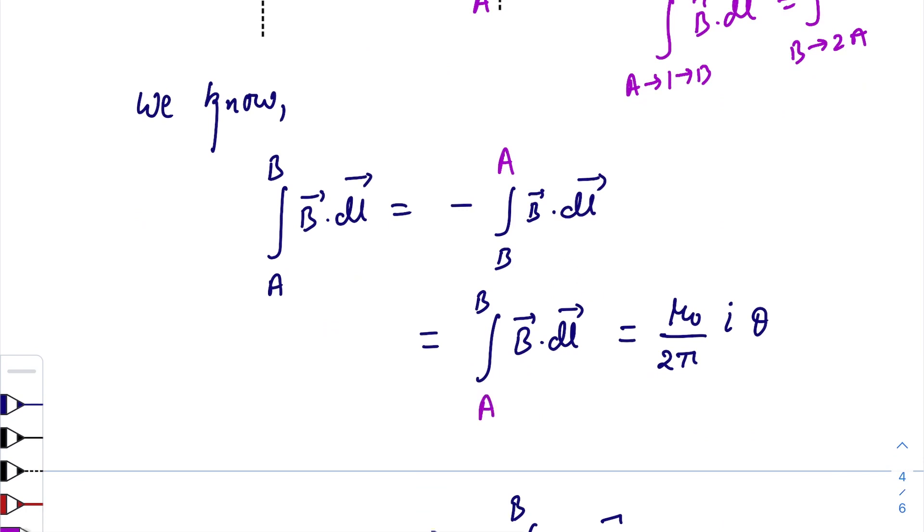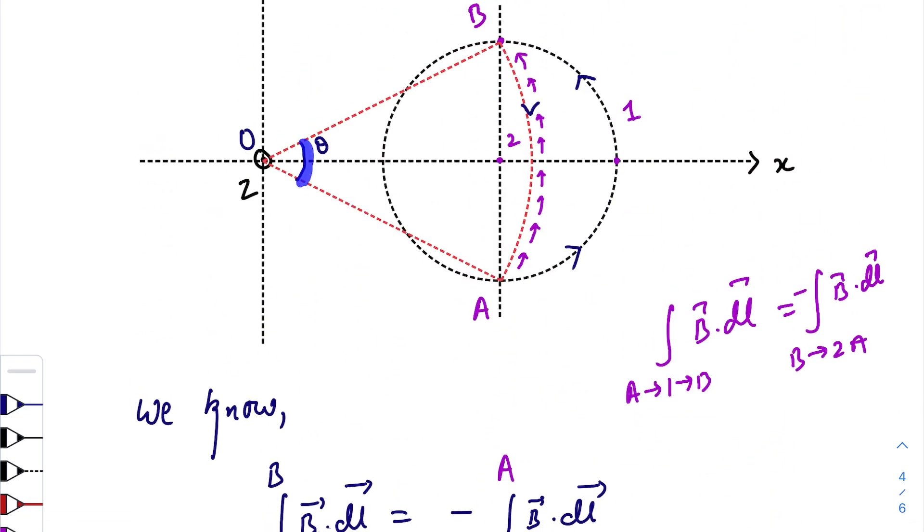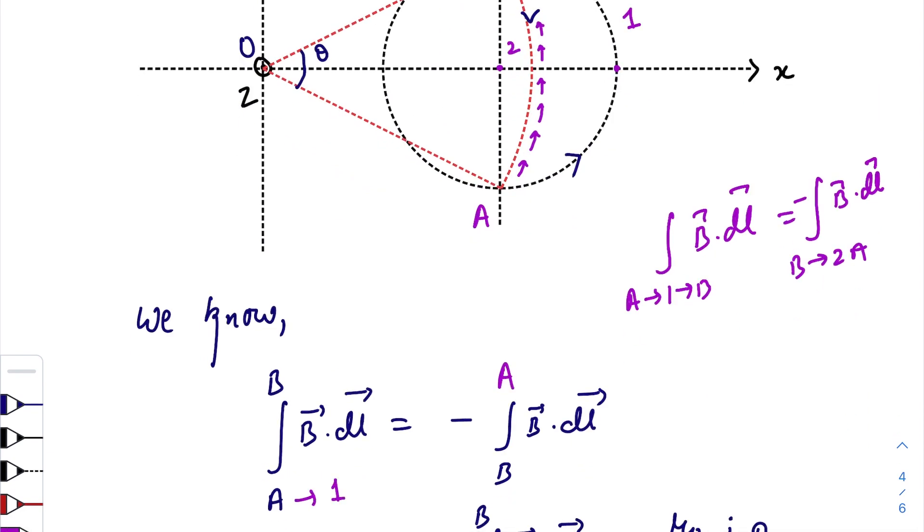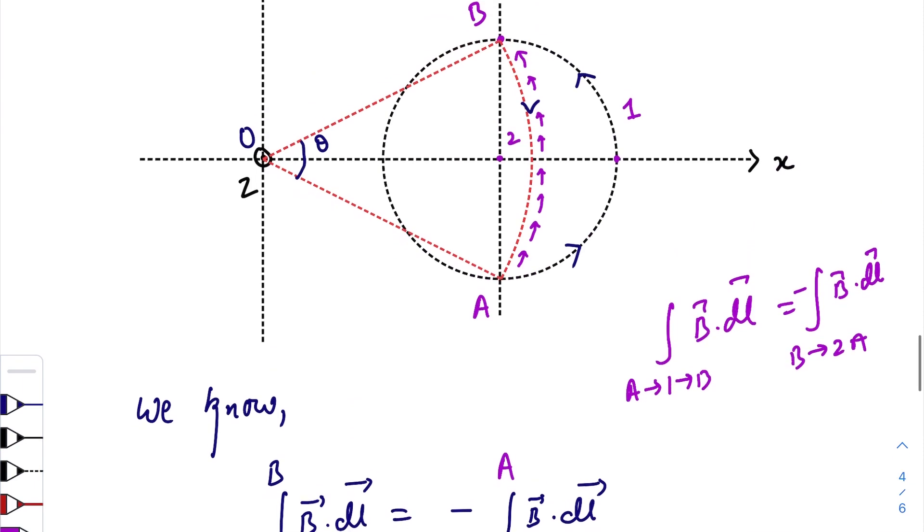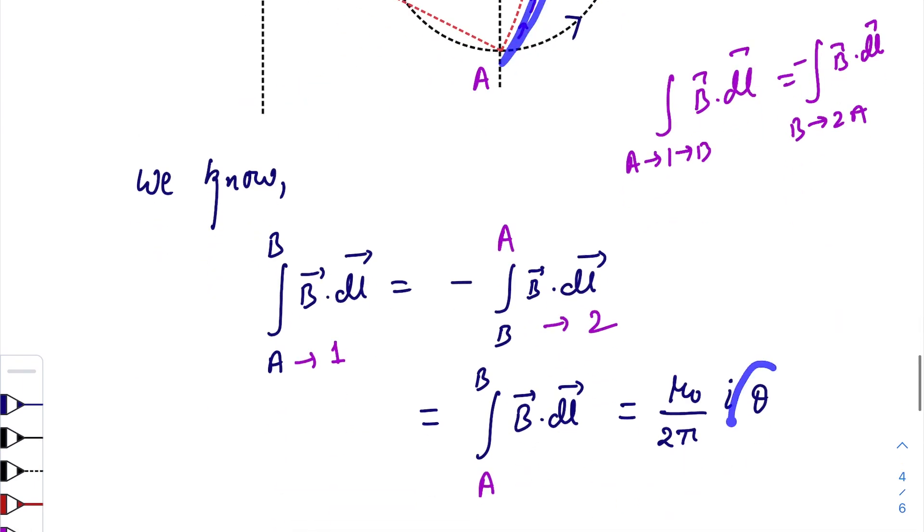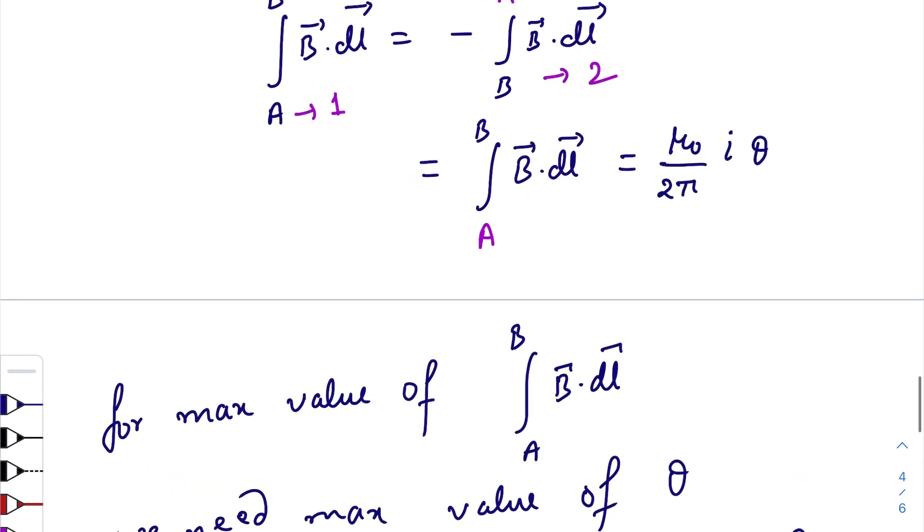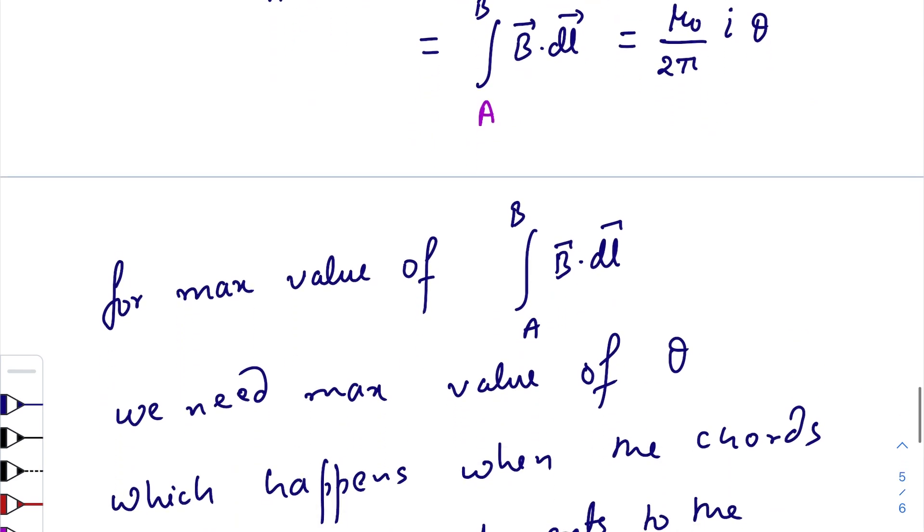If you integrate from A to B, we can write the general equation as μ₀/2π times i times this angle theta for this arc - this is for path 1 and this one is for path 2. We can easily find out for path 2 the angle theta.